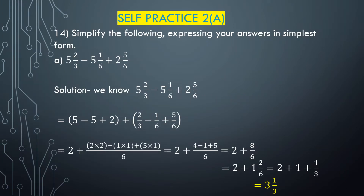Now we will solve question number 14. Question number 14 says: simplify the following expression, give your answers in simplest form. Part (a) is 5²/3 minus 5¹/6 plus 2⁵/6. We have to simplify this expression.